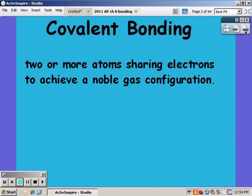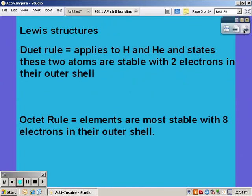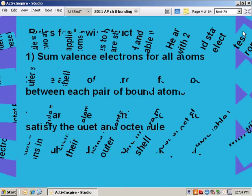Covalent bonding occurs when two or more atoms share electrons to achieve a noble gas configuration or full outer shell. The Duet rule applies to hydrogen and helium and states that these two atoms are stable with only two electrons in their outer shell, while the octet rule says that all other elements have to have eight in their outer shell.